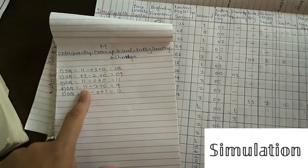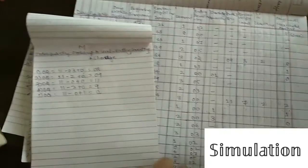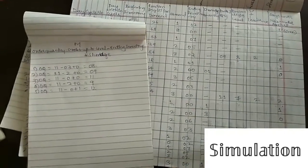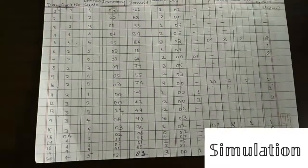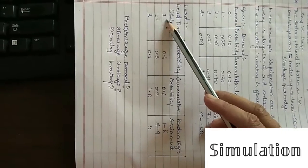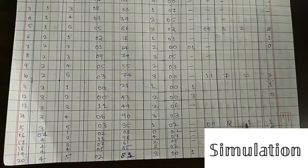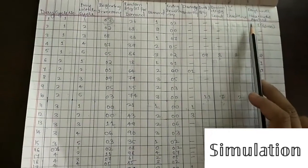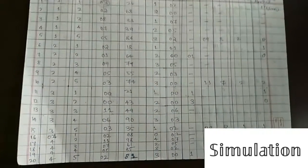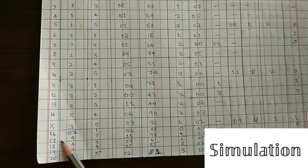Random digit for lead time is 2, which falls in the range 1–6, giving lead time of 1. So after one day — one row — the order of 9 refrigerators will arrive.